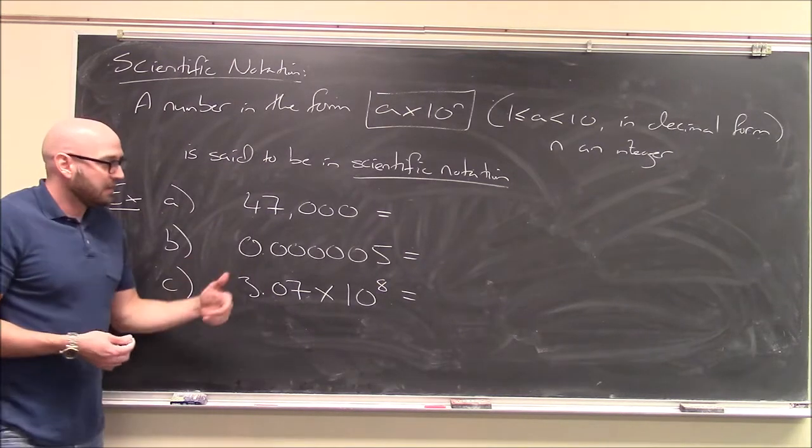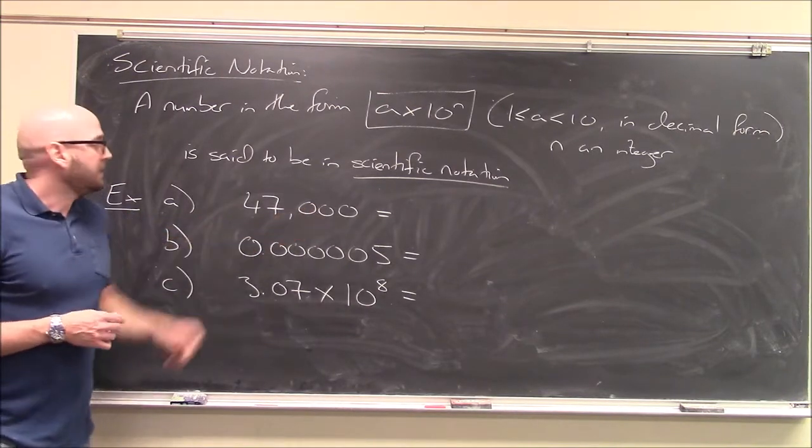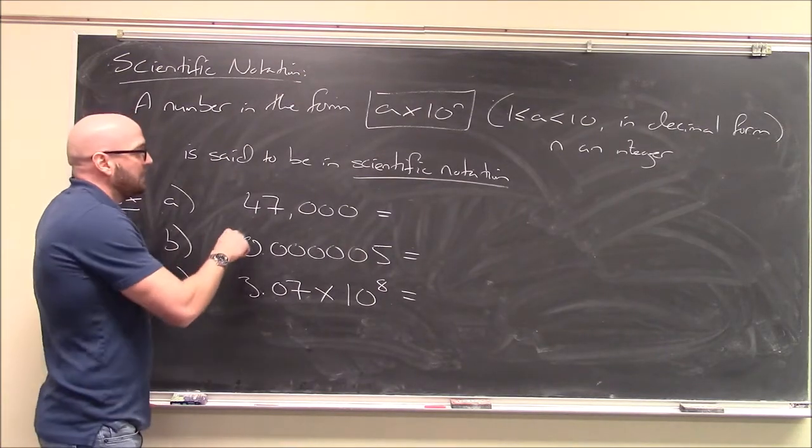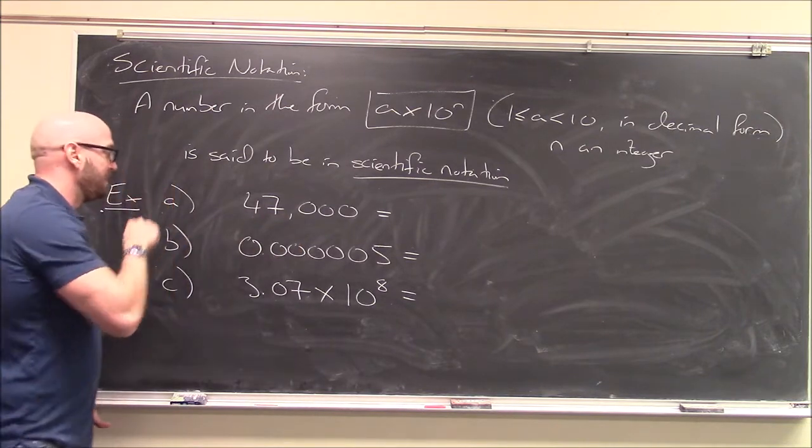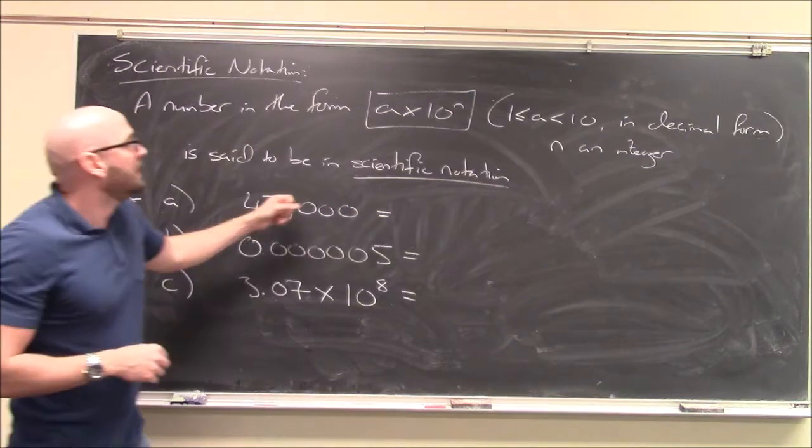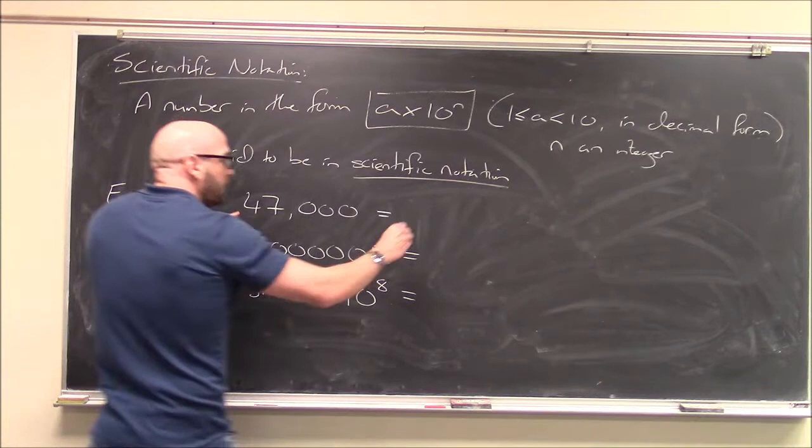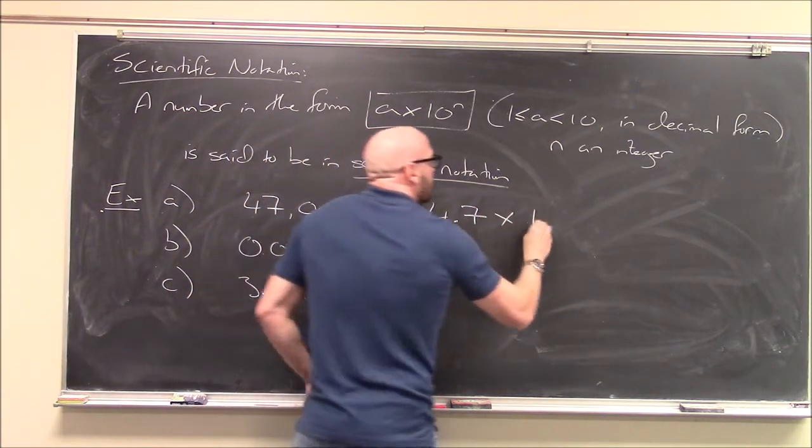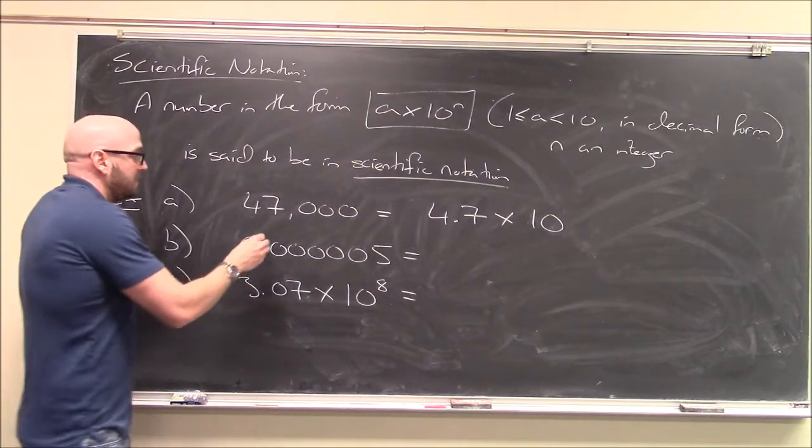So for example, here, like I said, we're going to be working with big numbers or really small numbers. Here, I've got 47,000. So I want to write this in scientific notation. All I have to do is sort of look at my first string of numbers until I get to just having a whole bunch of zeros left over. So here, I've got 47. Well, I want a number between 1 and 10. So I'm going to write this as 4.7. 4.7 times 10 to the something. What is my power going to be?